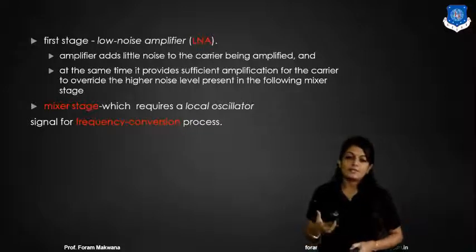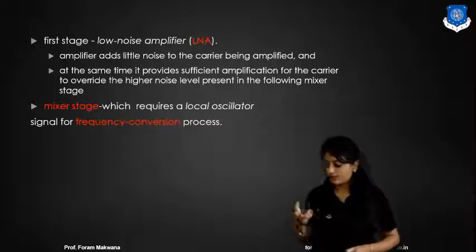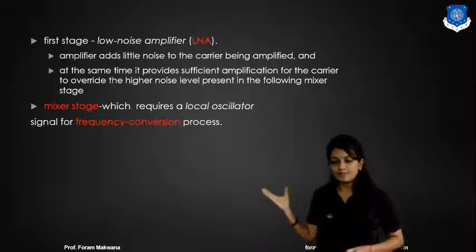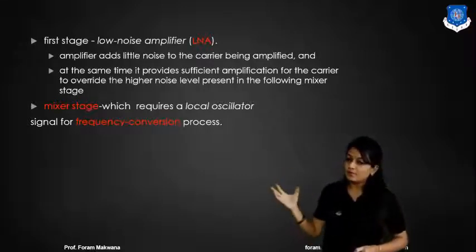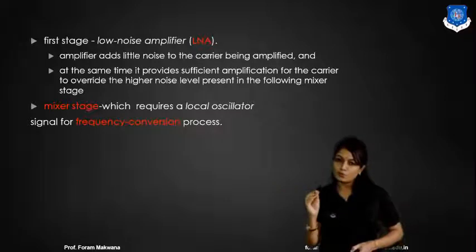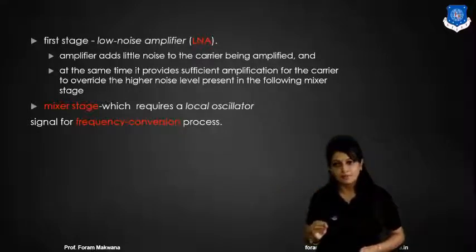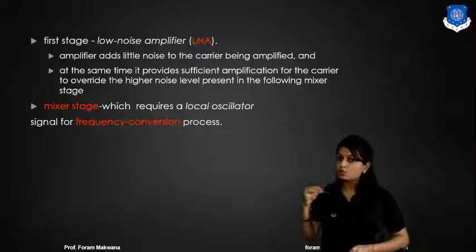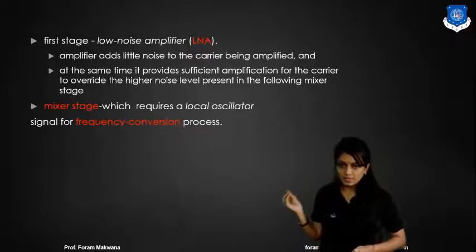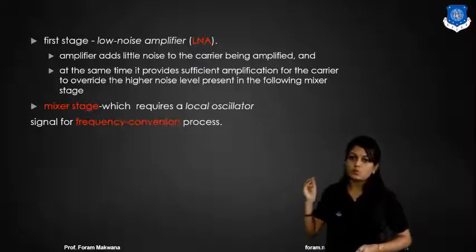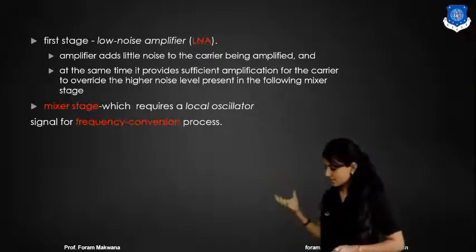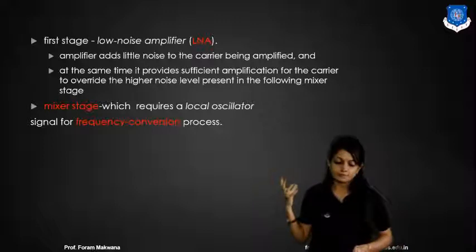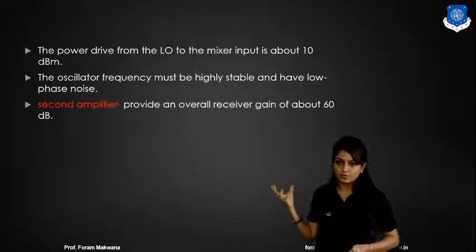As discussed, in the working of the wideband receiver, the first stage is the low noise amplifier. This amplifier will add a little amount of noise to the carrier signal. It also provides sufficient amplification to override the high noise level. The mixer stage is used for down-converting the signal.